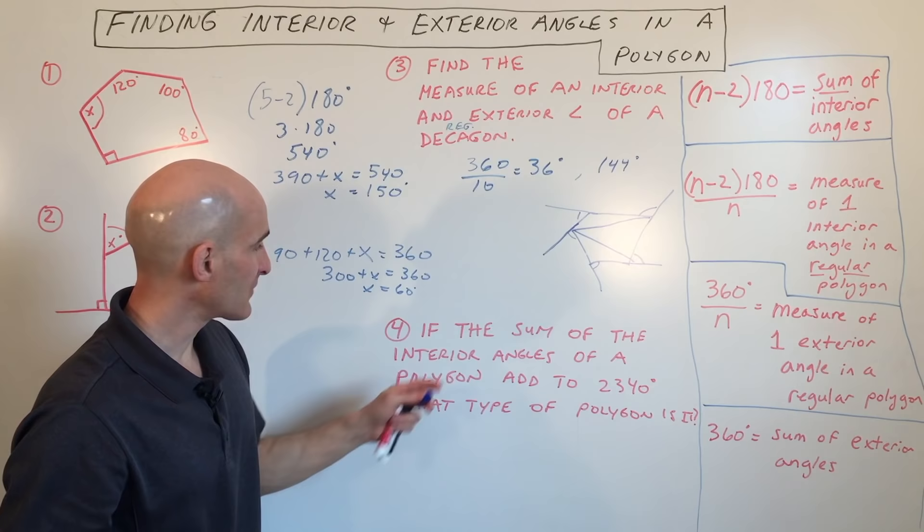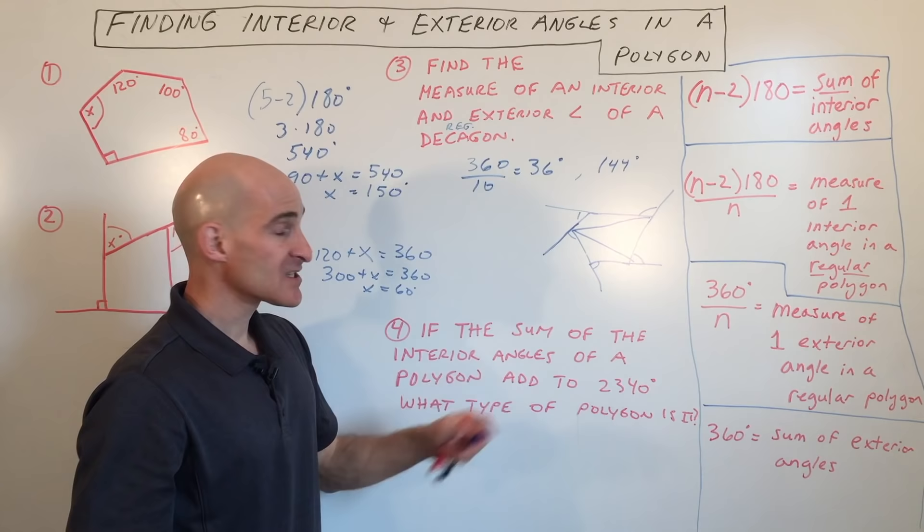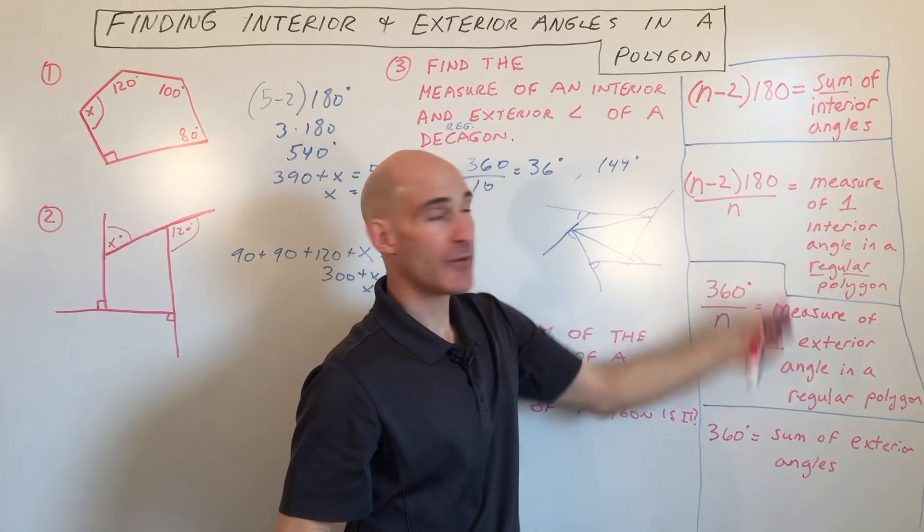So then the last one, if the sum of the interior angles of a polygon add to 2340, what type of polygon is it? So this one, it doesn't specify whether it's regular or not. It just says that all the interior angles add up to 2340. So we're going to go to this formula here, the sum of the interior angles. So it's helpful to memorize these formulas if you haven't already. And let's see if we can substitute what we have.